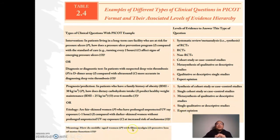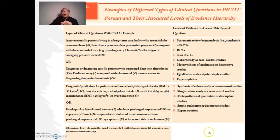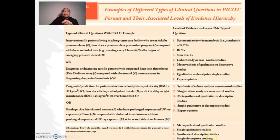For a meaning type of question, you look for the following sequence of evidence: metasynthesis of qualitative studies, then single qualitative studies, then synthesis of descriptive studies, and finally single descriptive studies. For purposes of understanding the PICOT question, we have compared the type of clinical question on the left with the level or hierarchy of evidence on the right.